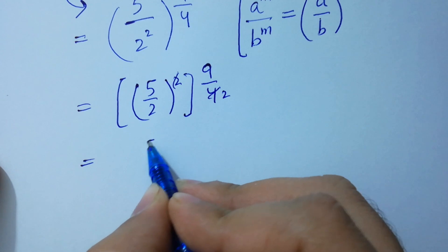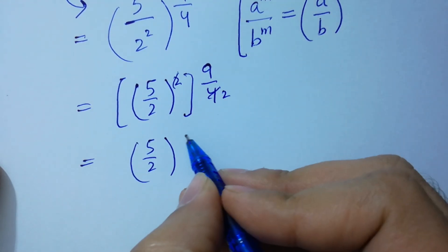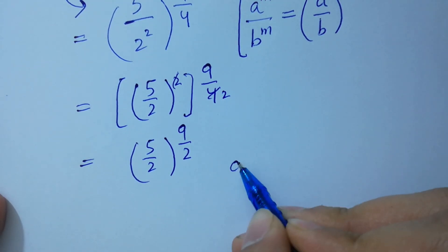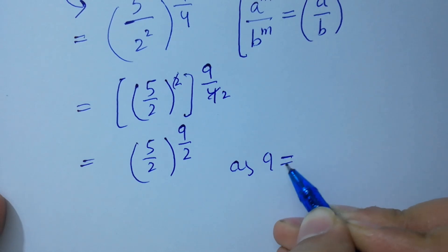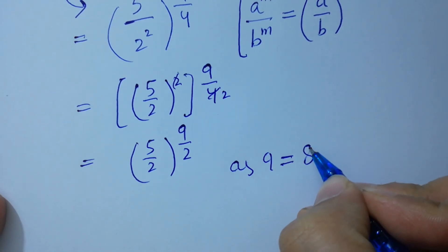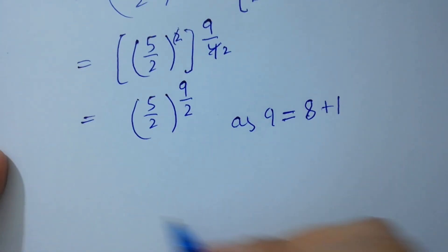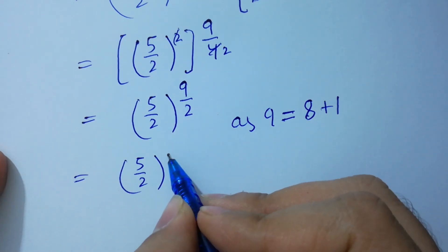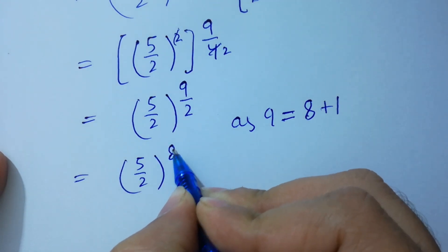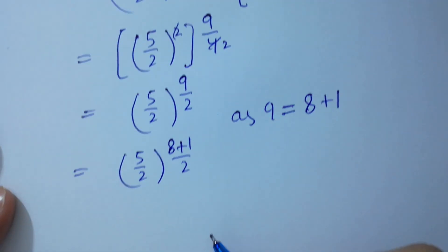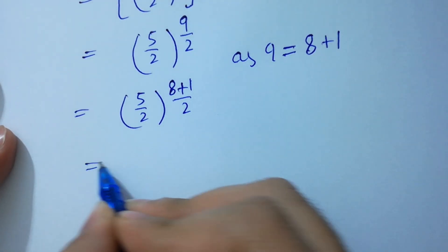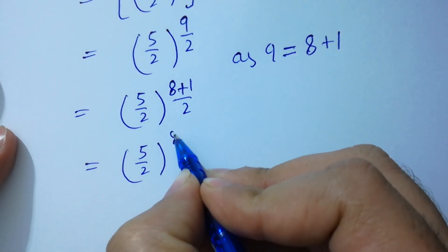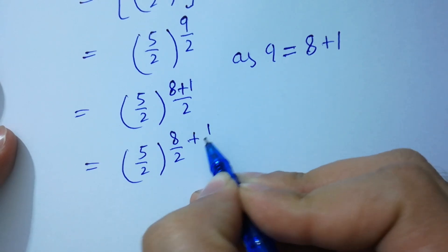(5/2) to the whole power 9/2. Since 9 equals 8 plus 1, we write (5/2) to the whole power (8+1)/2, which equals (5/2) to the power 8/2 plus 1/2.